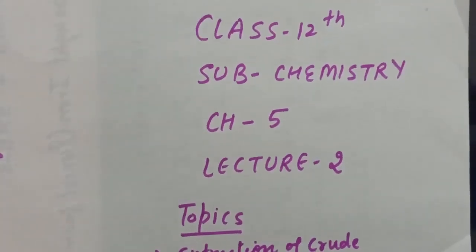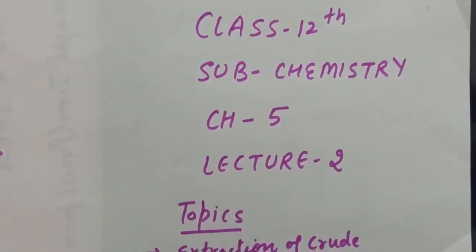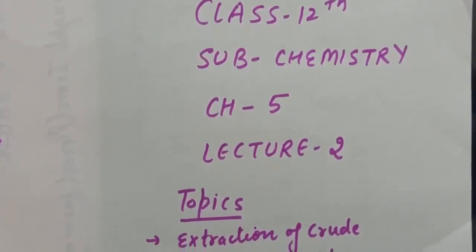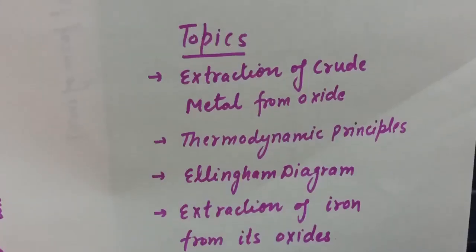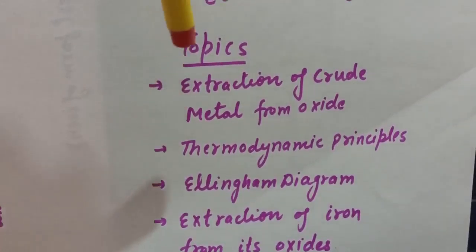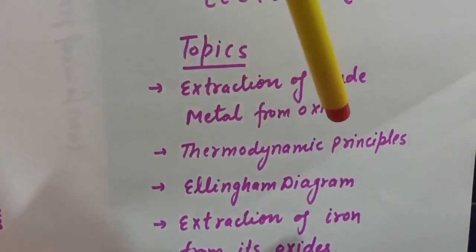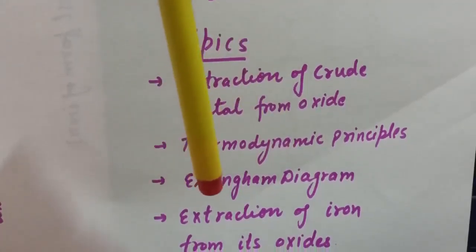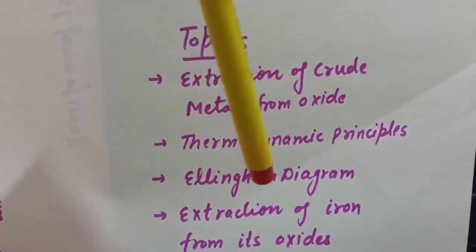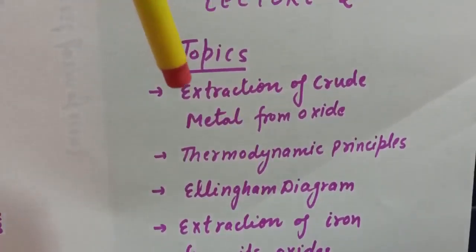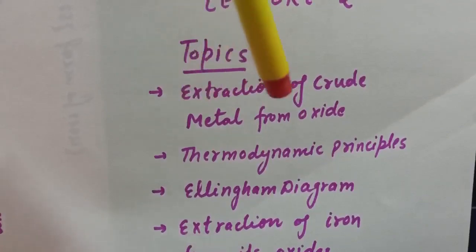Good morning everyone. This is Class 12 Chemistry, Chapter 5, Lecture Number 2. In Lecture 1 we discussed the methods for concentration of ore. In this lecture I will be discussing extraction of crude metal from oxide, thermodynamic principles of metallurgy, the Ellingham diagram, and its application — that is, extraction of iron from its oxide. Let's start with extraction of crude metal from oxide.